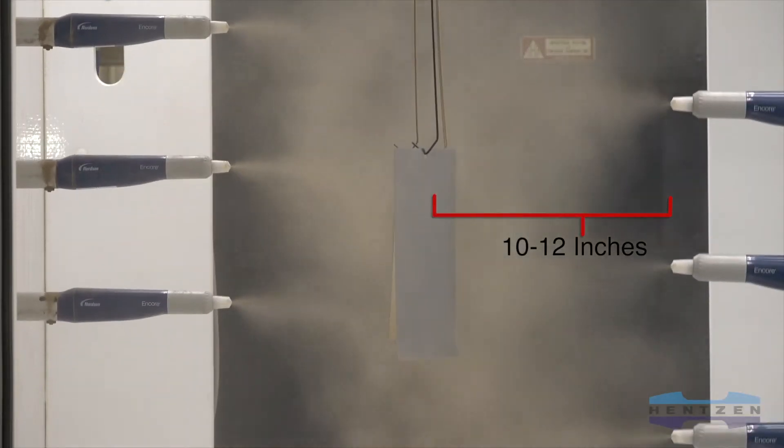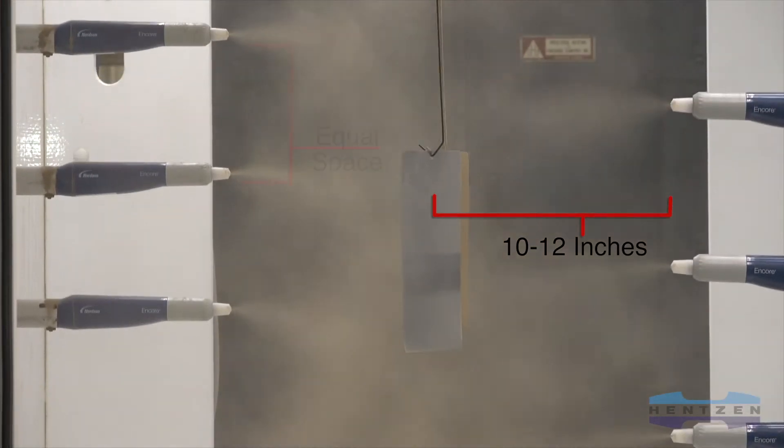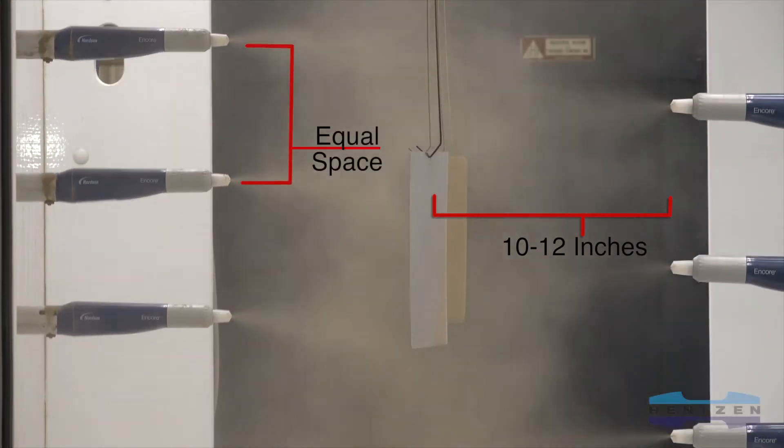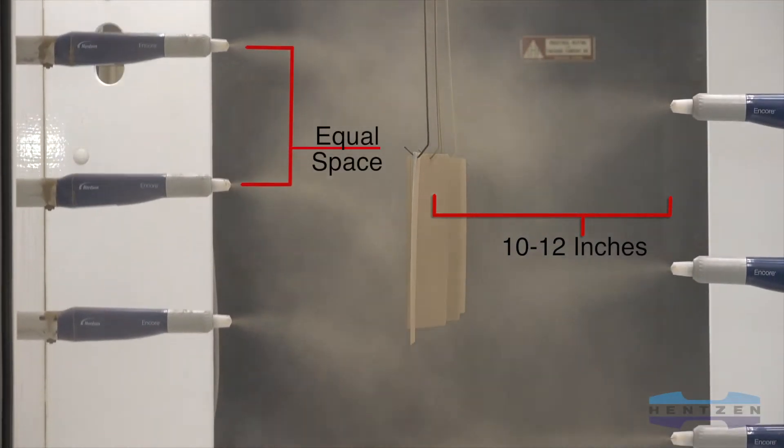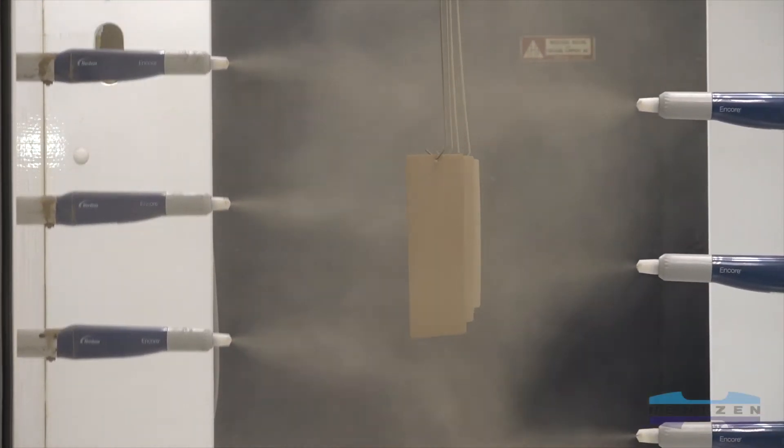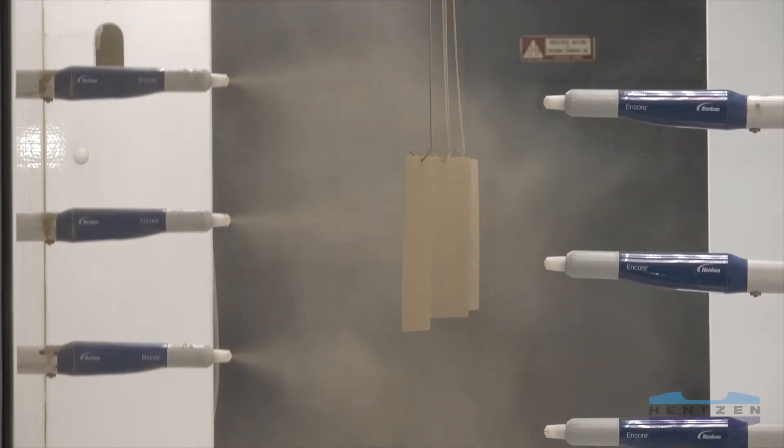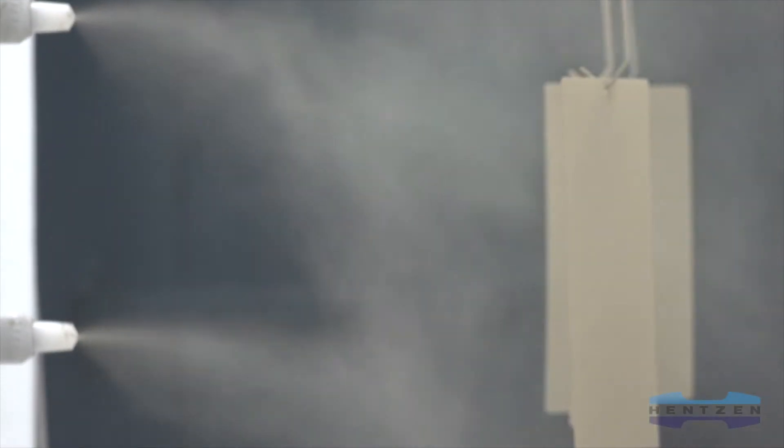Automatic powder coating guns should have a gun to part distance of 10 to 12 inches from the part being coated. Gun to gun spacing should be equal from top to bottom to ensure powder crossover from one gun to the next. Gun oscillating or reciprocating speeds should be set so that parts are properly coated to meet required mill thickness.